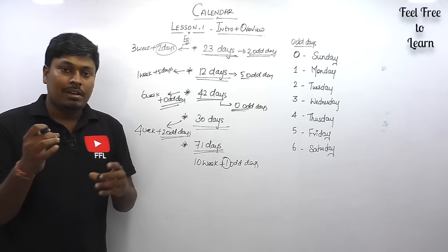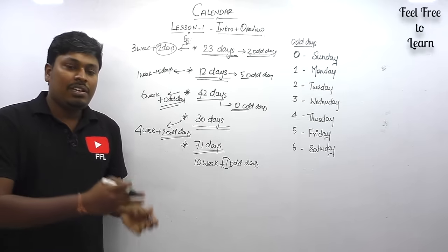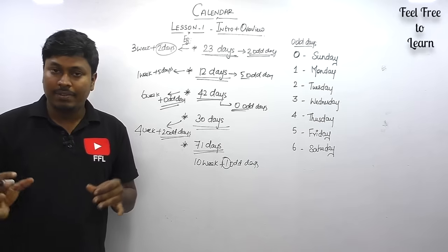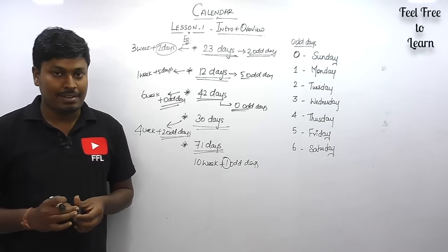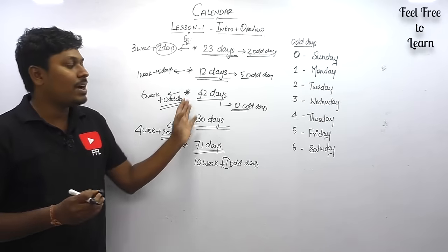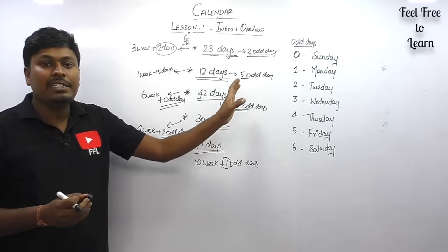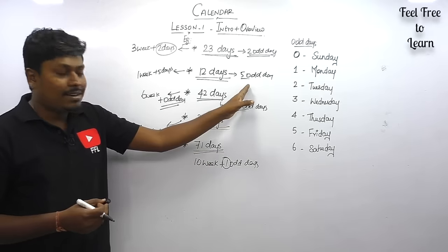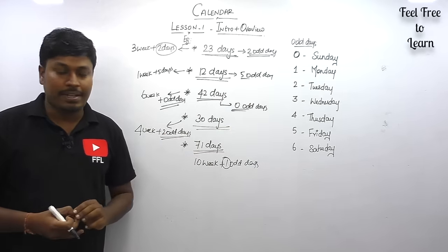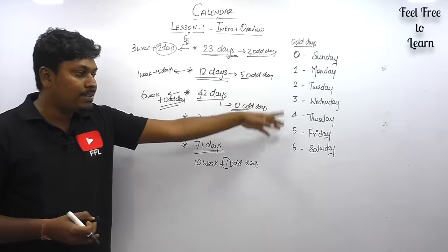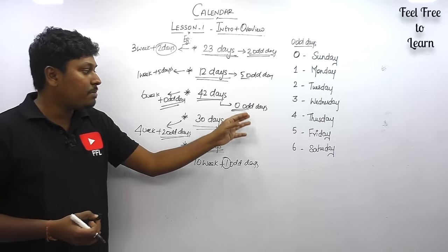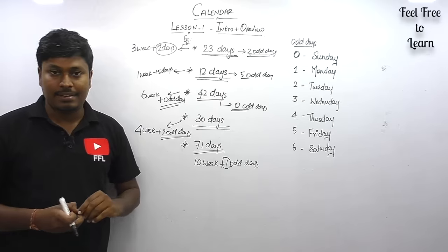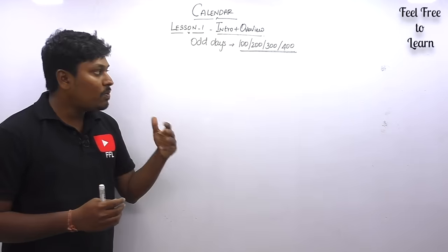Whatever number of days you have — 50, 110, 120 — first divide by 7 to convert the value into weeks and additional days. The extra days from a week are called odd days. Memorize the odd day chart; based on the odd day number you will determine the answer.